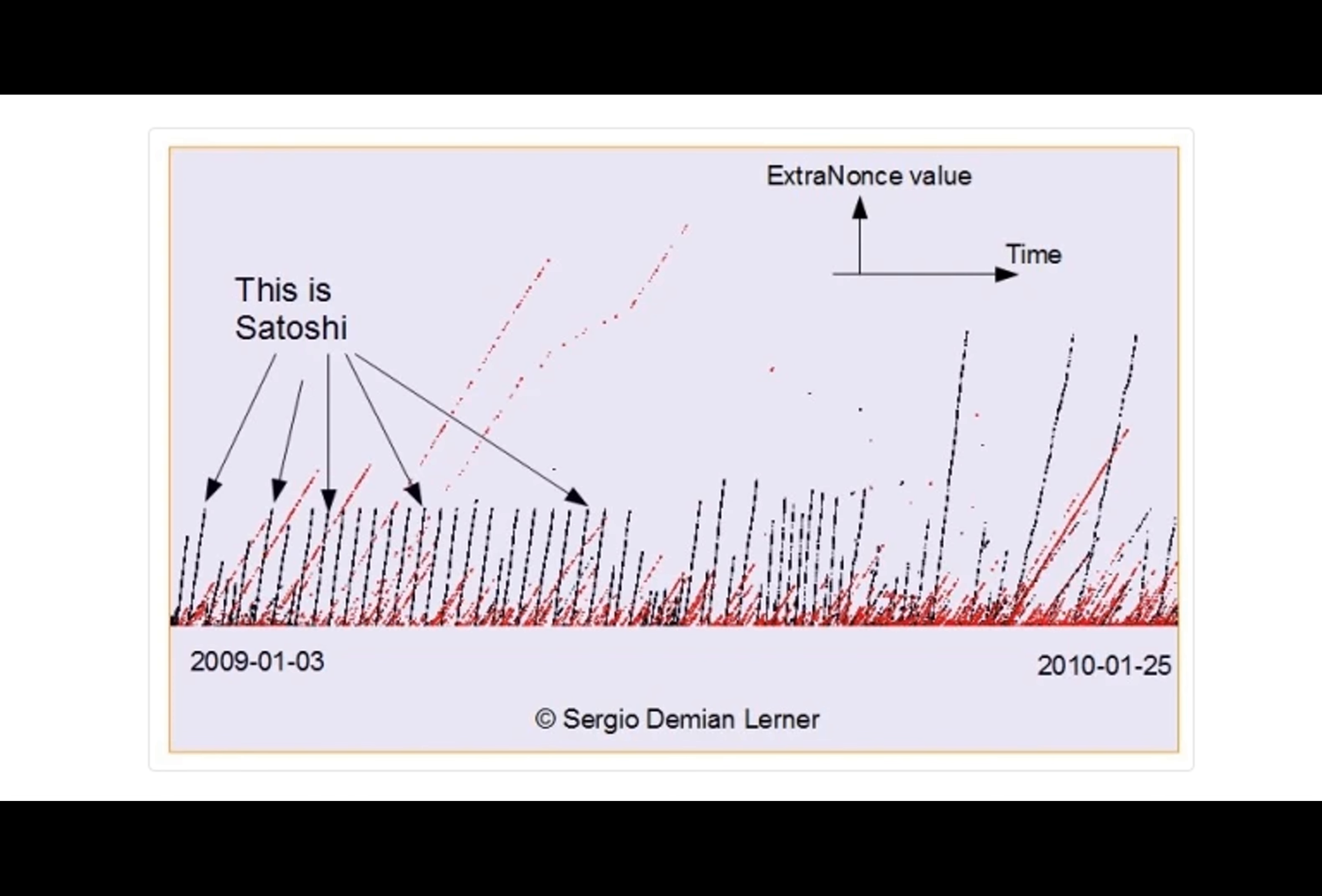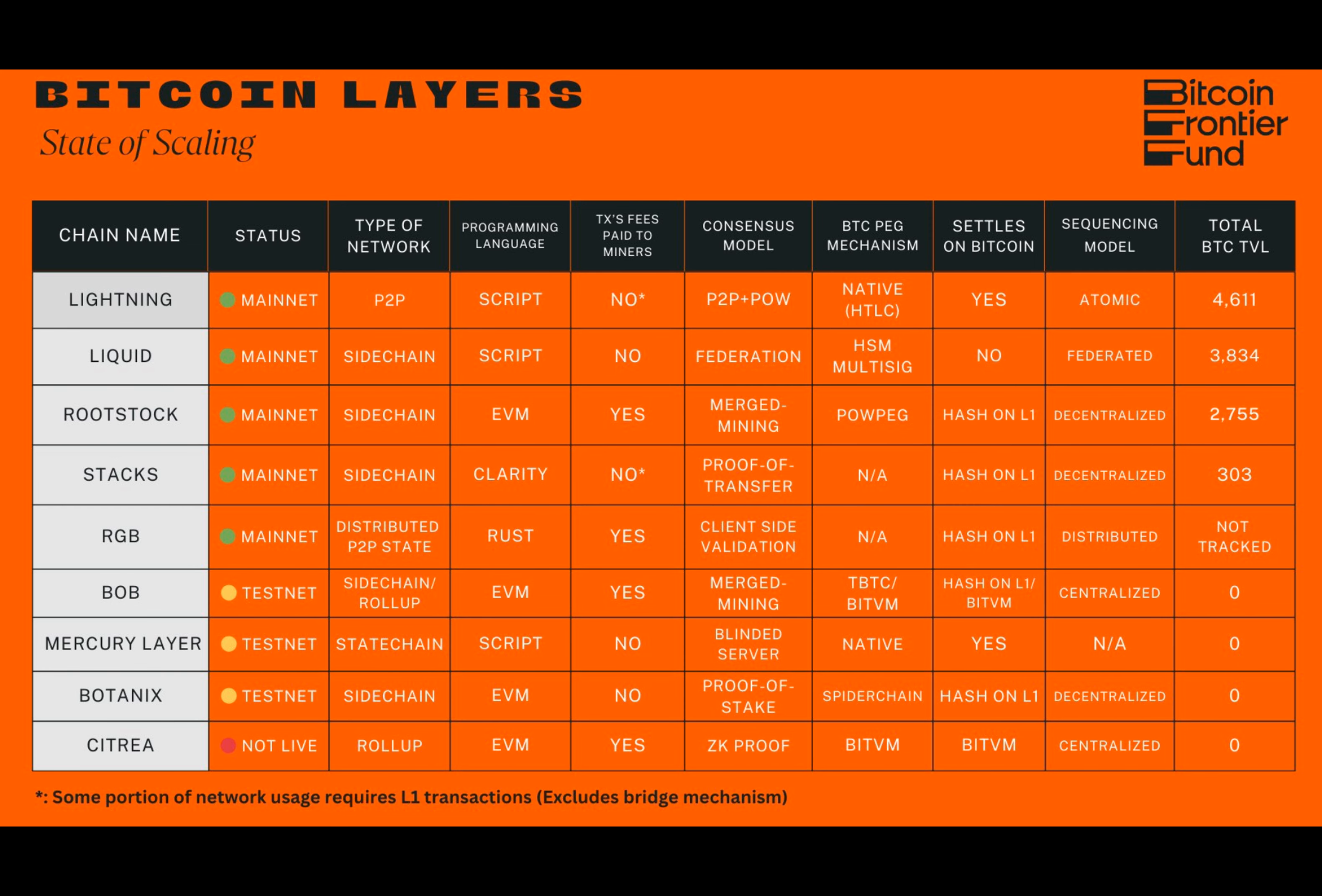The computer scientist added that Bitcoin's scripting language lacks key opcodes that could make BitVMX cheaper and more efficient. It will no longer be a question of should Bitcoin be able to do X, but how efficiently can Bitcoin do X, Lerner said.